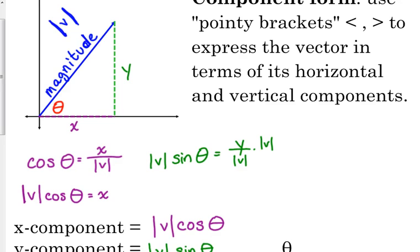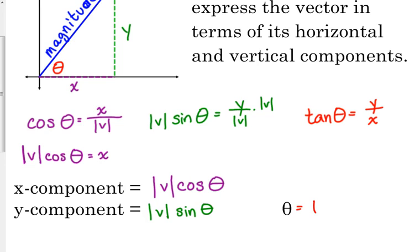Now, sometimes, we are given the components, and we need to find the angle. So, if we're given x and y, which trig function would that be? If we know x and y, tangent, opposite and adjacent. So, the tangent of theta, the angle, is equal to the opposite, y, over the adjacent, x. And if we want to solve for theta, we use the inverse tangent. So, theta is equal to the inverse tangent of your y component over your x component.